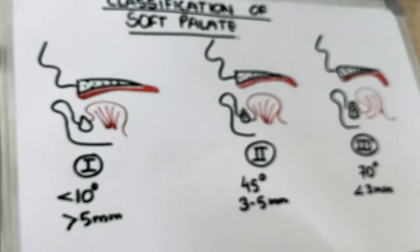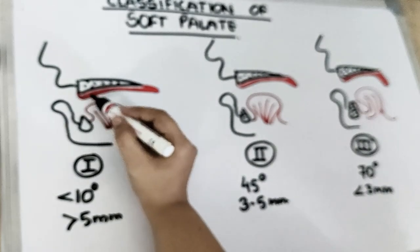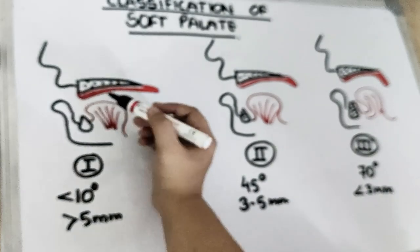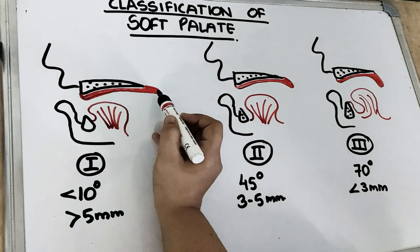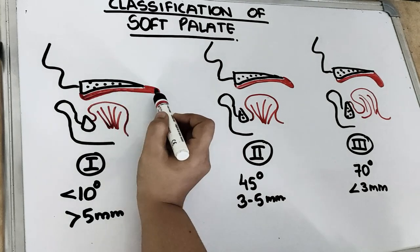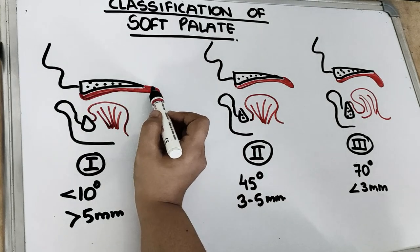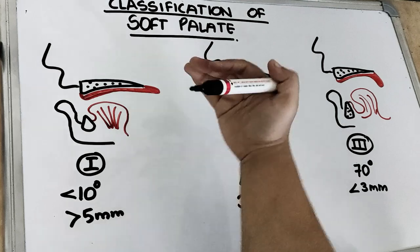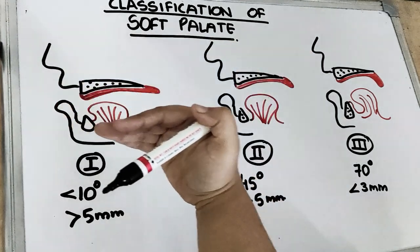As you can see in the diagram, the dotted black line is the hard palate. The soft palate is shown in red — the hanging part. And you can see it is making an angle somewhere at the horizontal level.